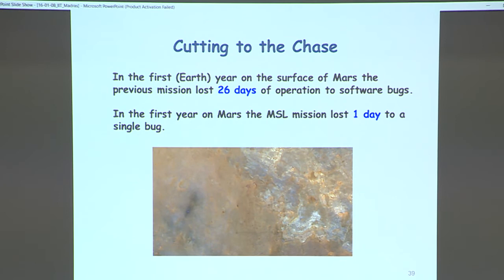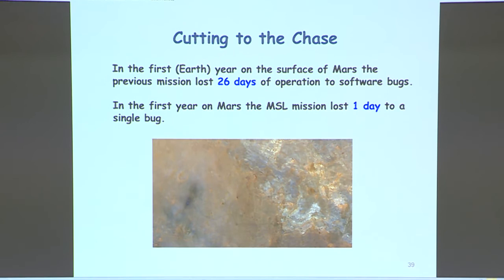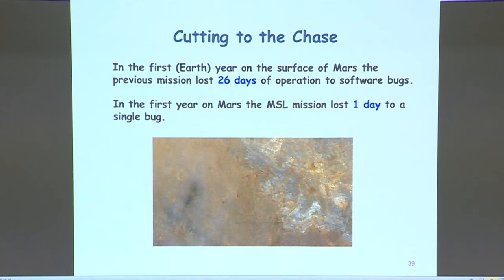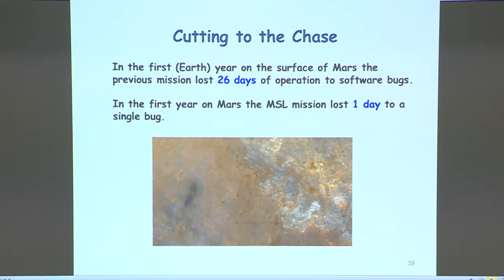What happened with this new software verification process? In the previous software mission to Mars, the mission lost 26 days of operation due to software bugs. In its first year, the Curiosity rover lost only one day to a single bug. With the right software verification tools and processes, we can significantly improve the quality of mission-critical software.